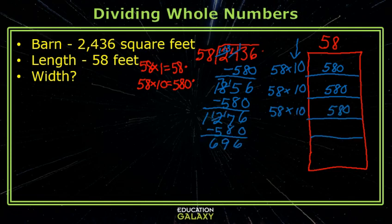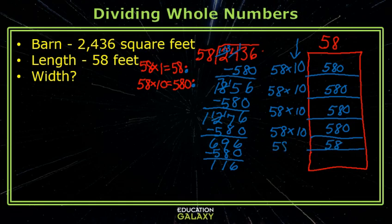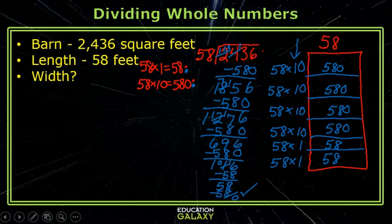Keep doing this until we have less than 580. I can go one more time. I cannot take out any more sets of 580, but I can take out a set of 58. So I'll write 58 times 1, and I still subtract. I can take out one more set of 58. Yay, I have a zero remainder.